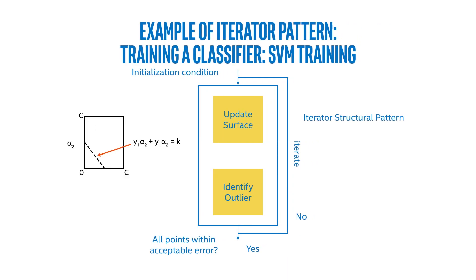Some examples of this: here is training a classifier and support vector machine training. So imagine we're kind of building a fence in n-dimensional space. In one iteration, we update the surface and we identify all the outliers—basically feature vectors that are on the wrong side of the fence. If they're within an acceptable error range, then we continue. Otherwise, we iterate again and update the surface.